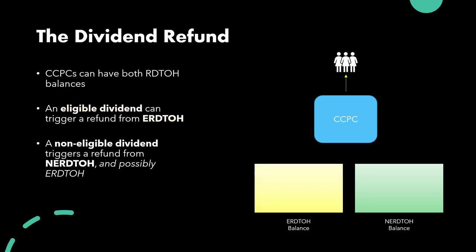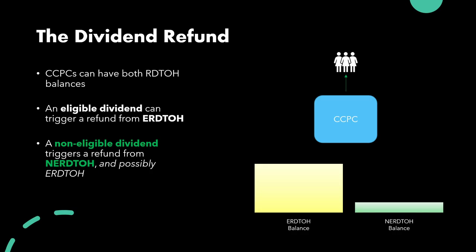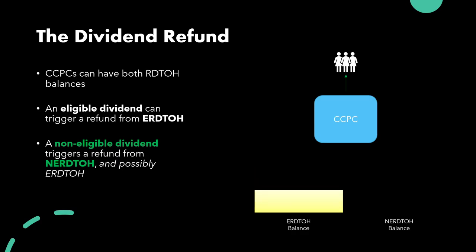Consider a non-eligible dividend, which will trigger a refund from the non-eligible RDTOH account and would reduce the balance therein. Unlike an eligible dividend, a non-eligible dividend, if it is sufficient enough in size, can deplete the balance in the non-eligible RDTOH account and actually start to reduce the balance in the eligible RDTOH account.